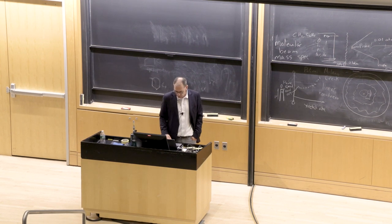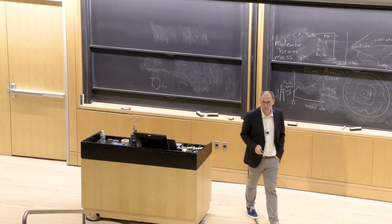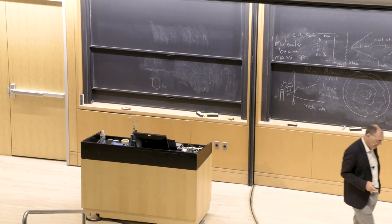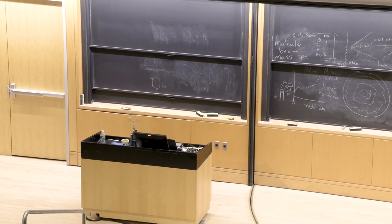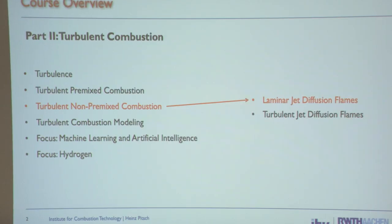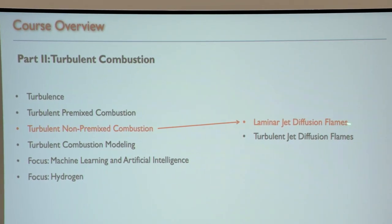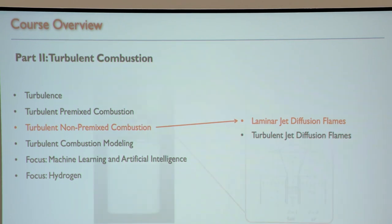For non-premixed combustion, there's no similar burning velocity discussion. There is a section on turbulent non-premixed combustion, which starts with laminar flames and looks at the flame length. We will discuss more about non-premixed flames when we talk about modeling, but I want to go through this quickly because the result is particularly interesting.